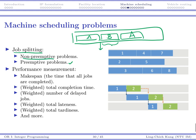Problems may also be categorized according to performance measurements. Sometimes we talk about makespan — the time for your last job to be completed. Sometimes we talk about total completion time: for each job there is a time it leaves the system, and we sum all of them to try to finish all jobs as soon as possible. We may also talk about the number of delayed jobs, total lateness, total tardiness, and so on.